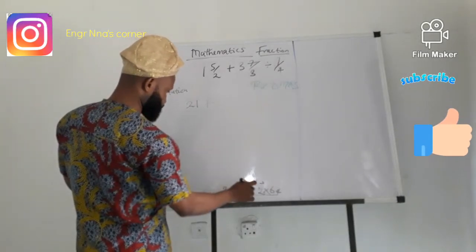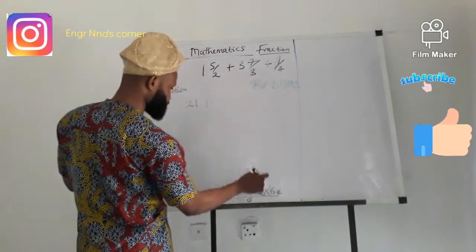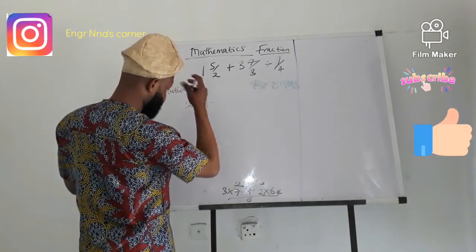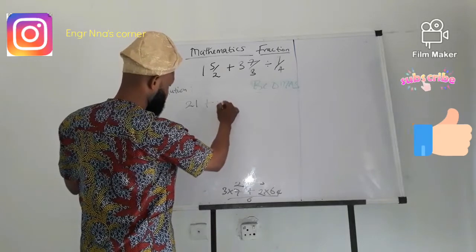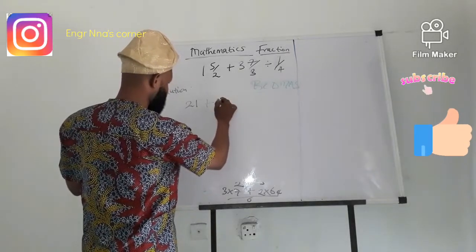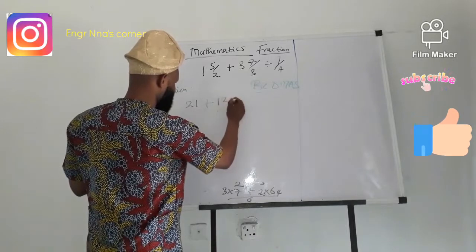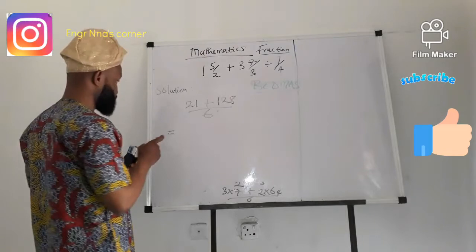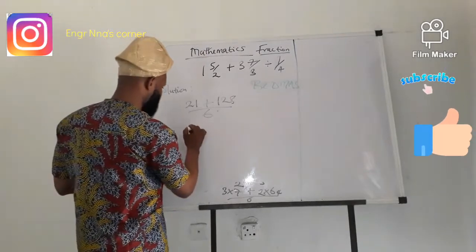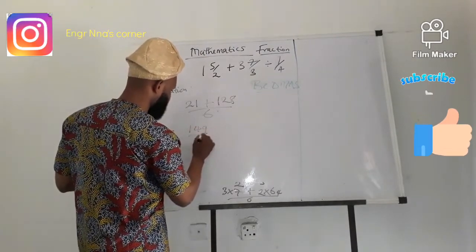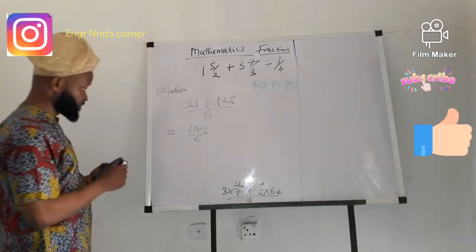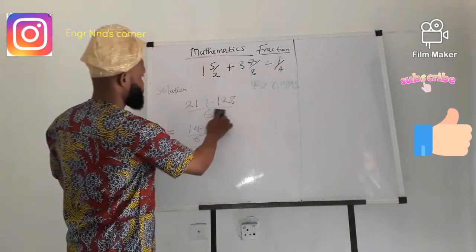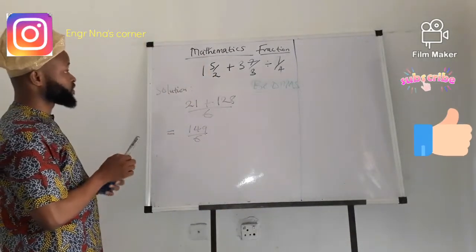21 plus 128 over 6. It should give us 149 divided by 6. So if that gives us 149 divided by 6, we will go ahead by solving using long division.